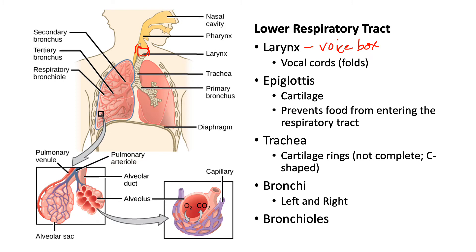One cartilage I want us to focus on is the epiglottis. As I mentioned, the pharynx is a shared opening for both the respiratory system and the digestive system. The epiglottis' function is to close over the trachea when you swallow so that food doesn't enter into the respiratory system. Instead, it goes behind the trachea into the esophagus, which is the tube that leads to your stomach.